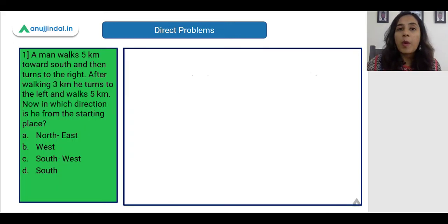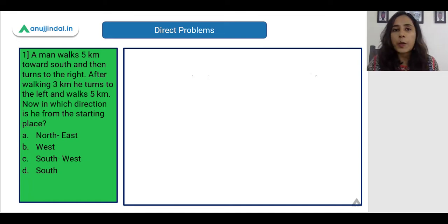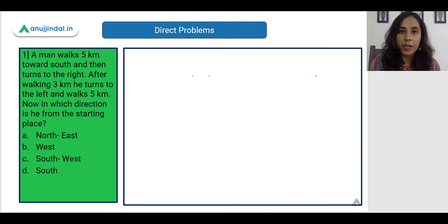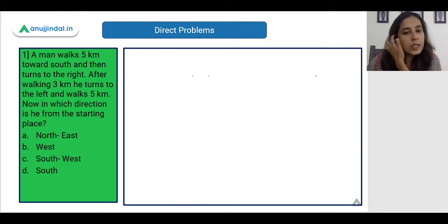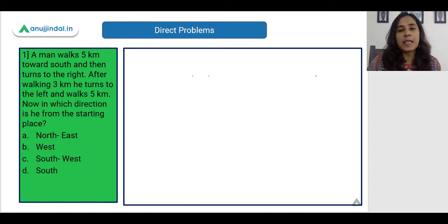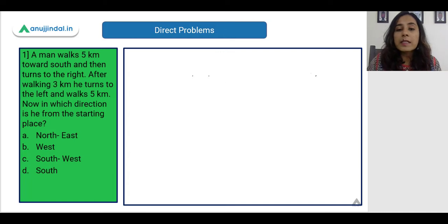Now these are very direct problems which deal just with the knowledge of four directions. I have already taught you the eight directions — four primary directions and four derived directions. With that knowledge we can solve these questions. A man walks five kilometers towards the South and then turns to the right.